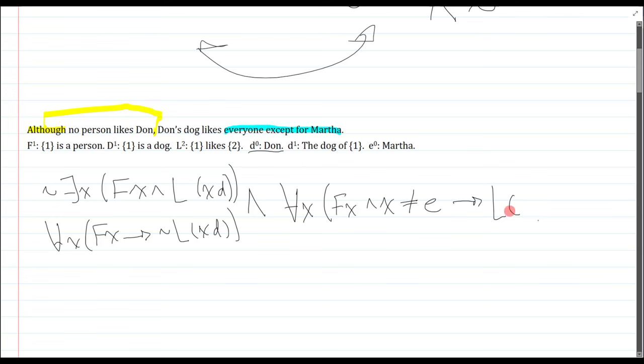So that's L is the liking relation. The dog of Don, DD, no big deal. And likes you, that's the X.